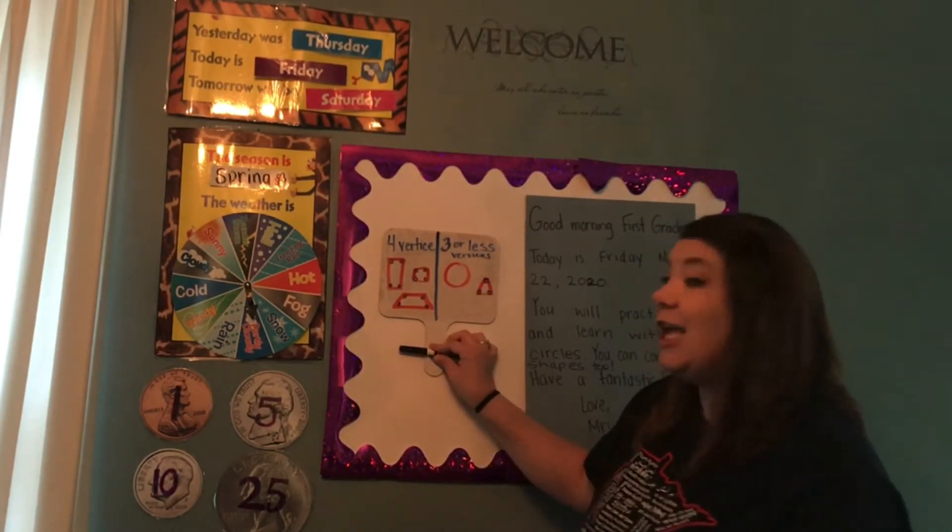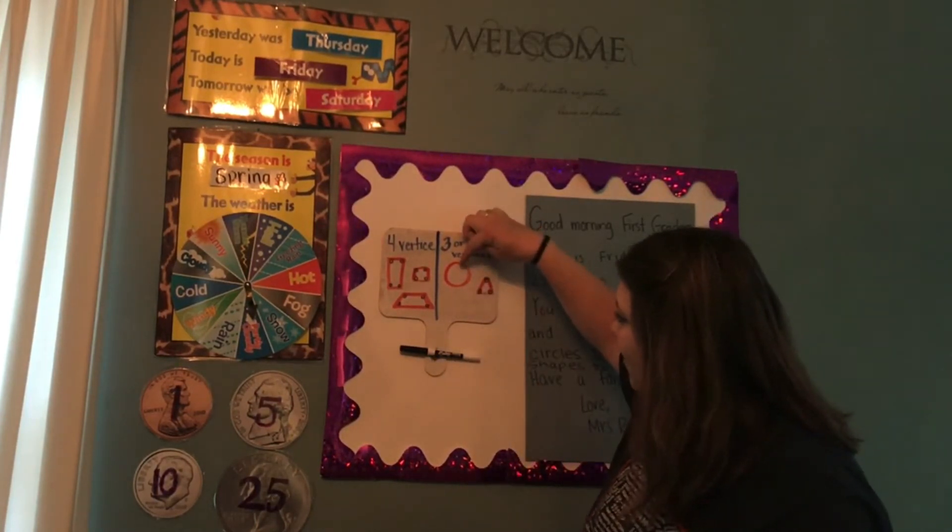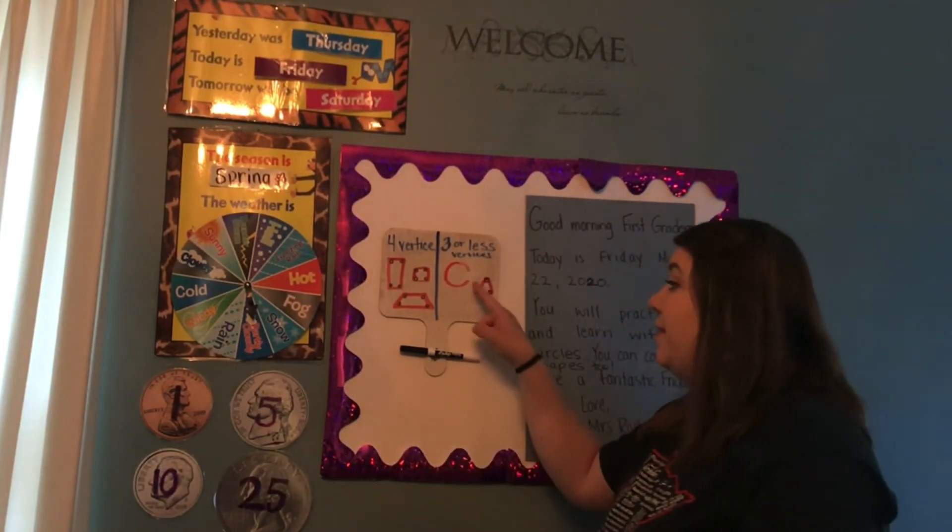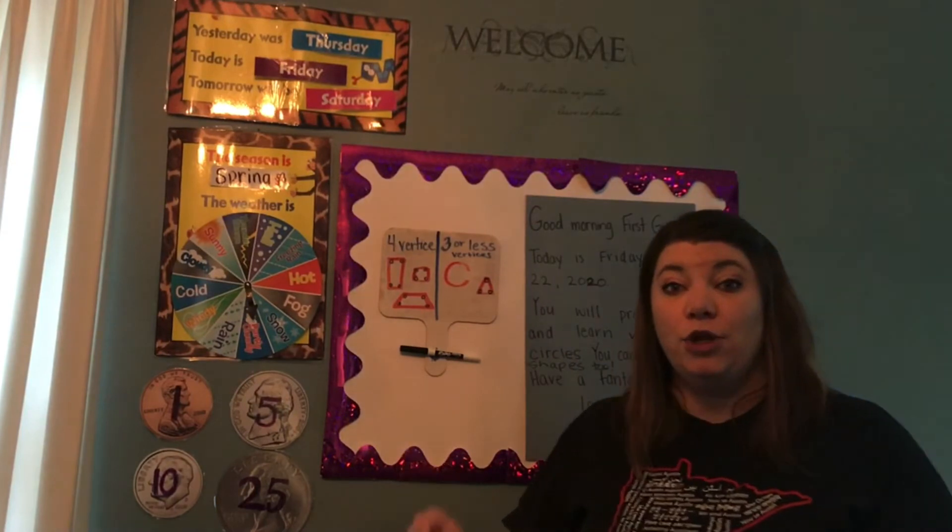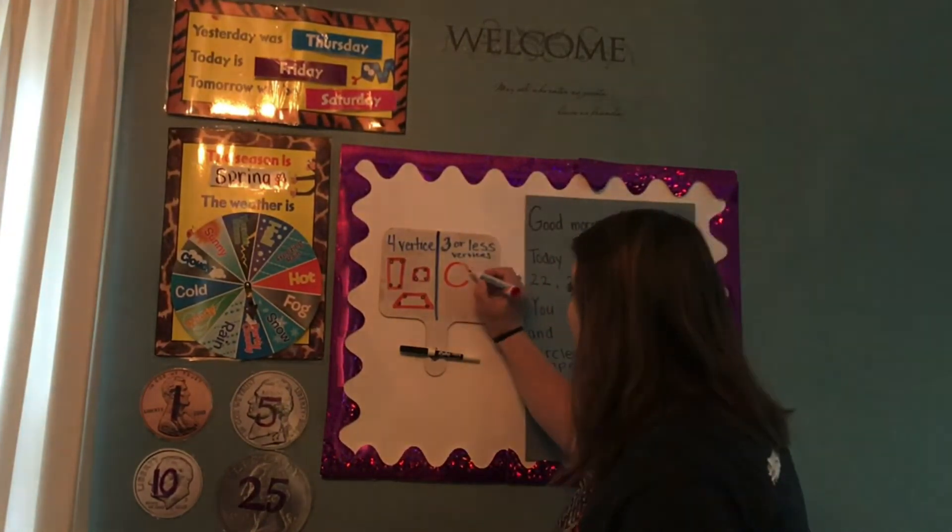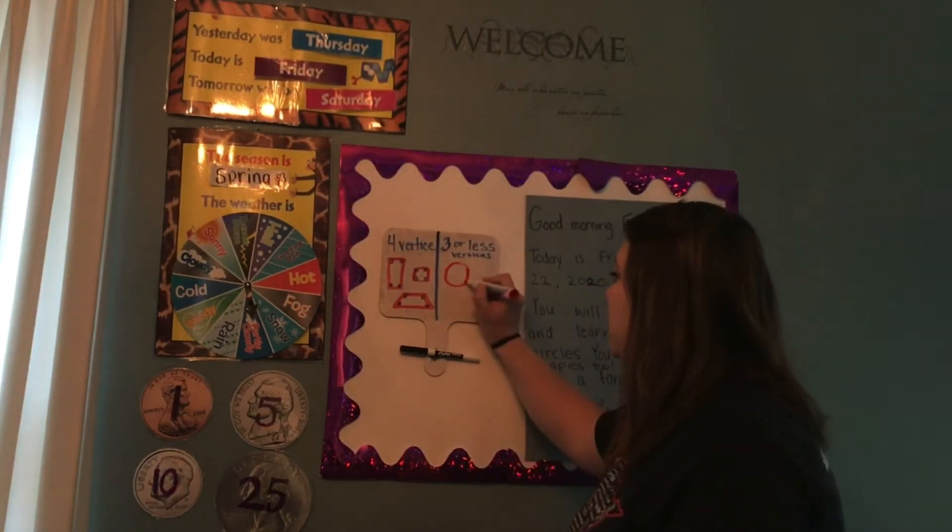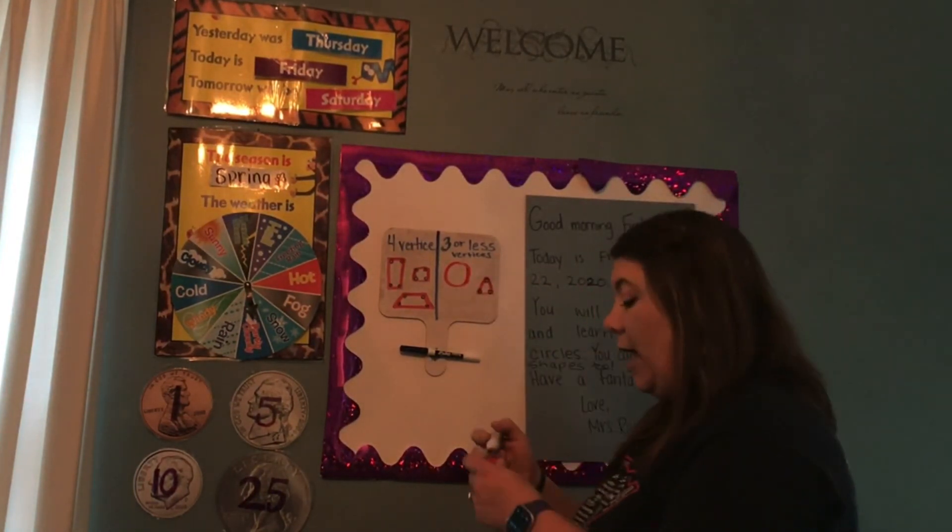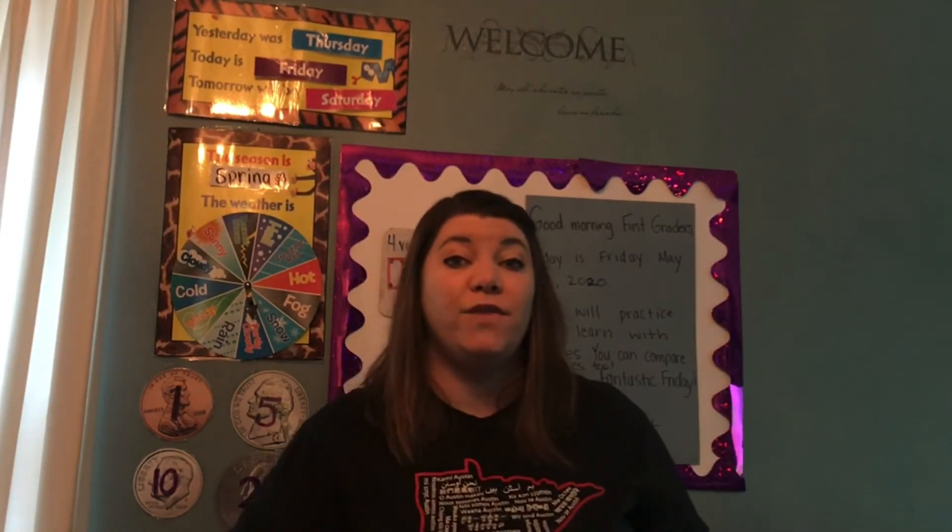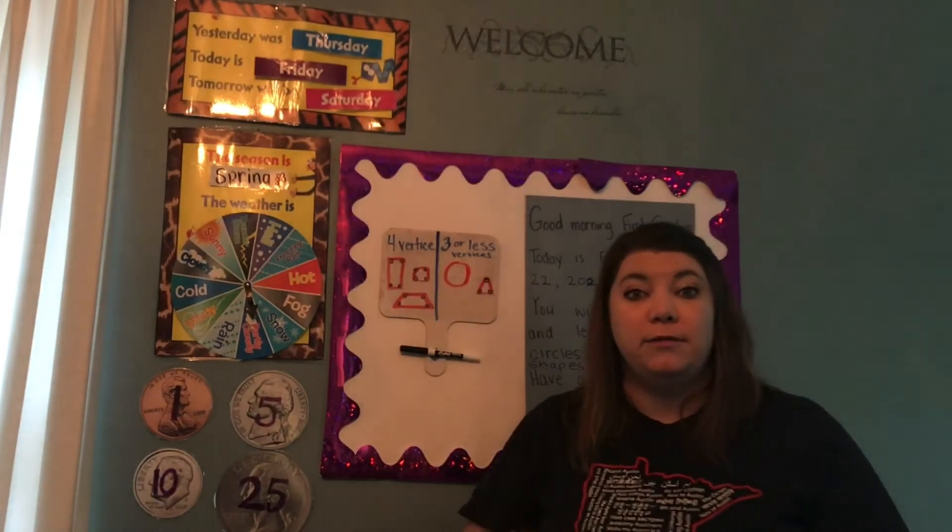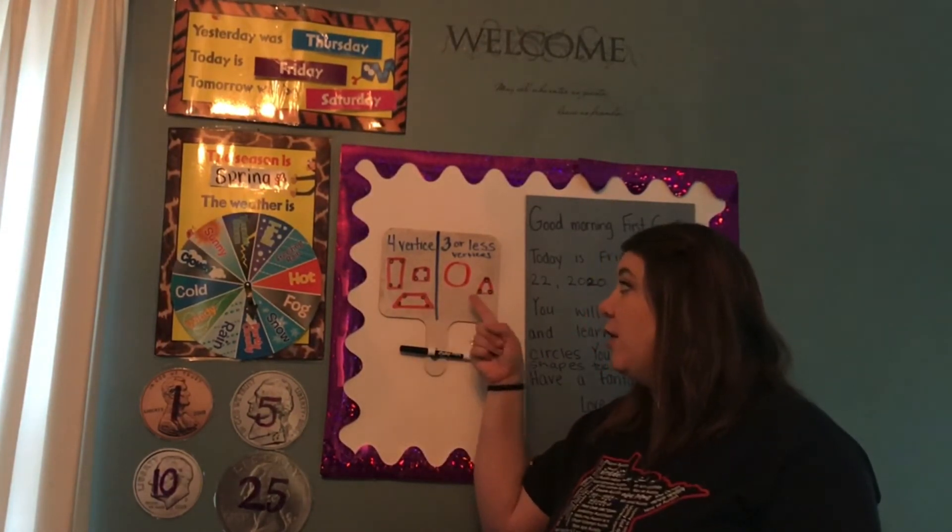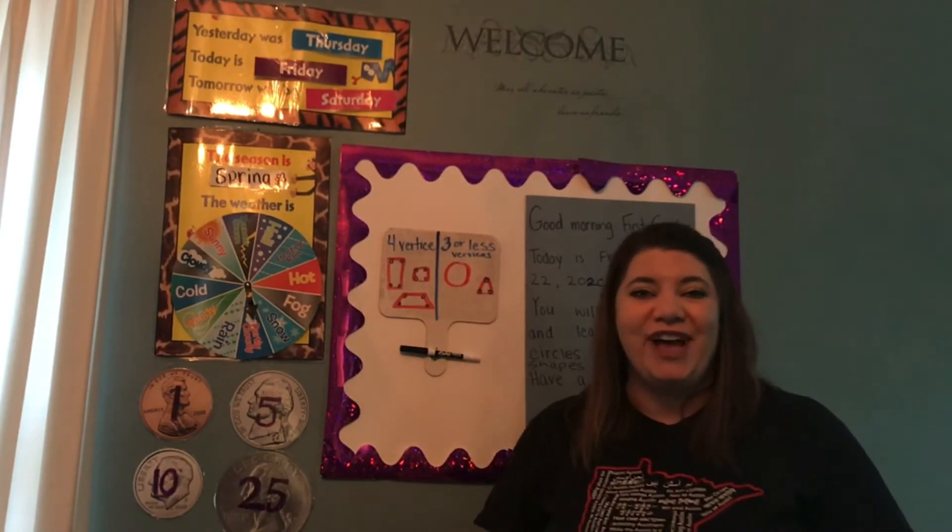A circle is a closed shape because you can see there isn't a line. If I made a line like this, it kind of looks like a C now. That is not closed. But when we talk about a shape and it is closed, that means it makes a circle. A circle does not have any sides or vertices because it is round. It doesn't have straight edges like our other shapes. So we know that there are no vertices in a circle and no sides.